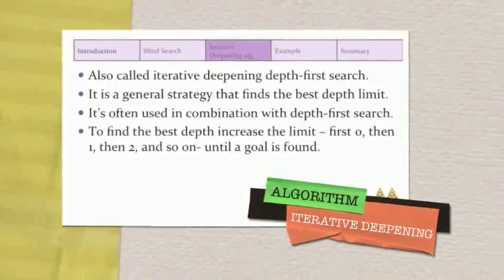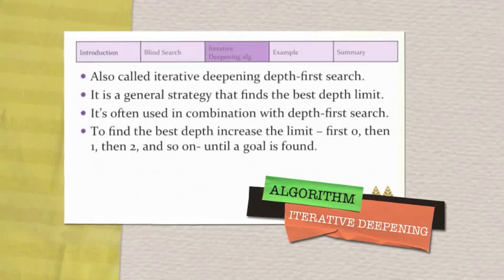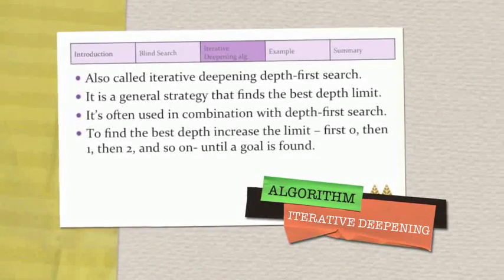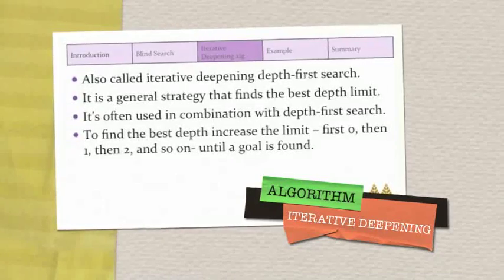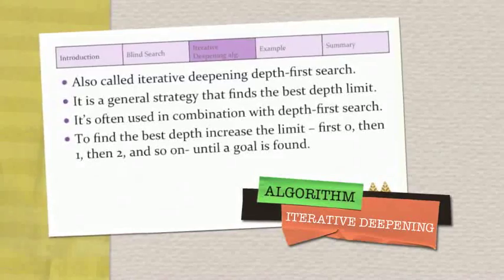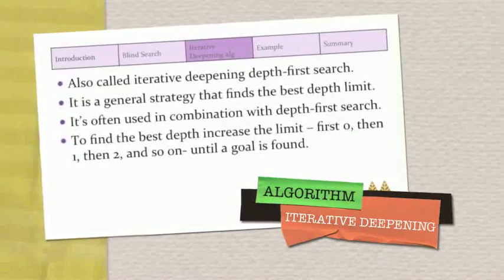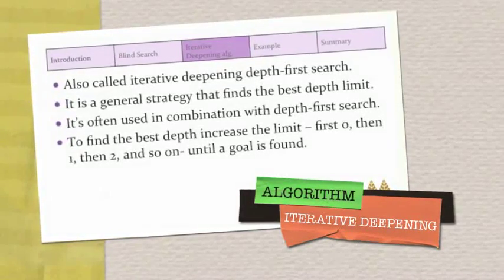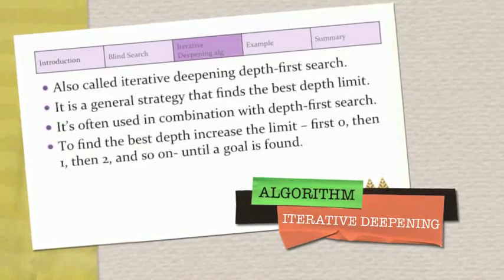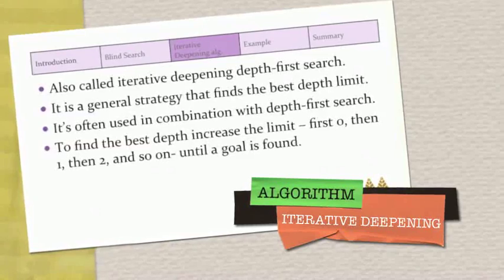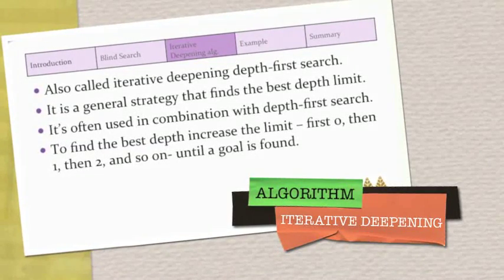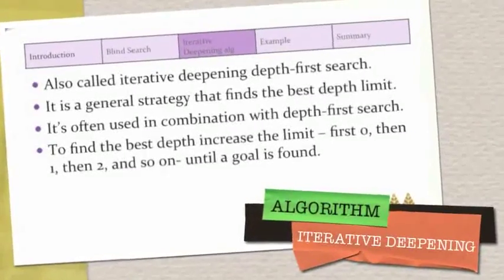It's time to talk about iterative deepening search, also called iterative deepening depth first search. It is a general strategy that finds the best depth limit and it's often used in combination with depth first search. To find the best depth, it gradually increases the limit — first zero, then one, then two, and so on — until a goal is found. This will occur when the depth limit equals the depth of the shallowest goal node.